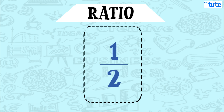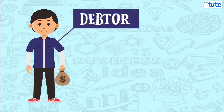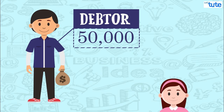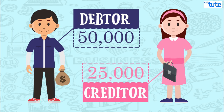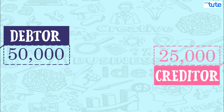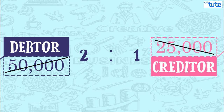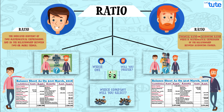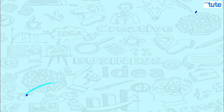It helps in knowing about something in a more analytic manner. In accounting terms, taking a very simple example: debtors are at 50,000 and creditors are at 25,000. We can say the debtor to creditor ratio is 2:1, meaning creditors are half of the debtors. I hope you all must have got the basic idea of what ratio exactly means.